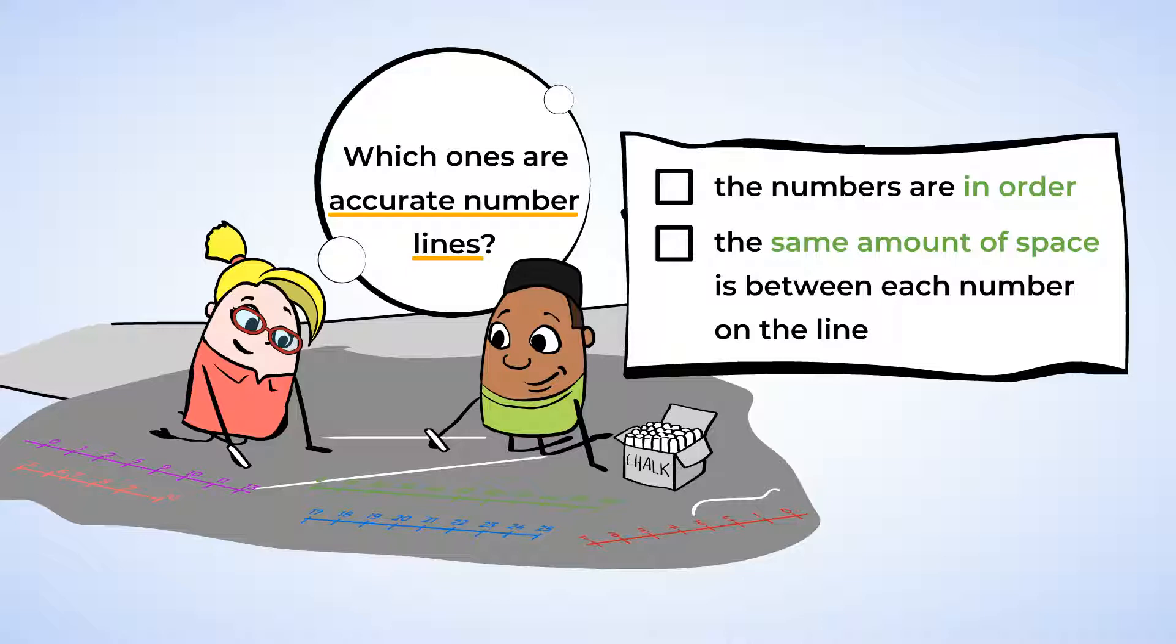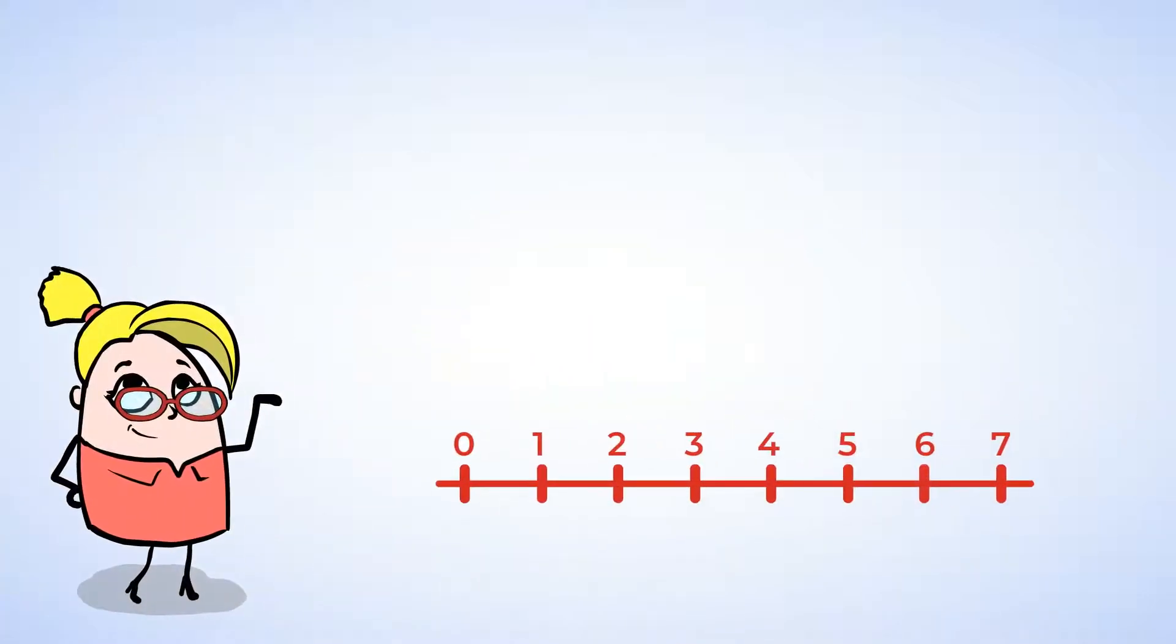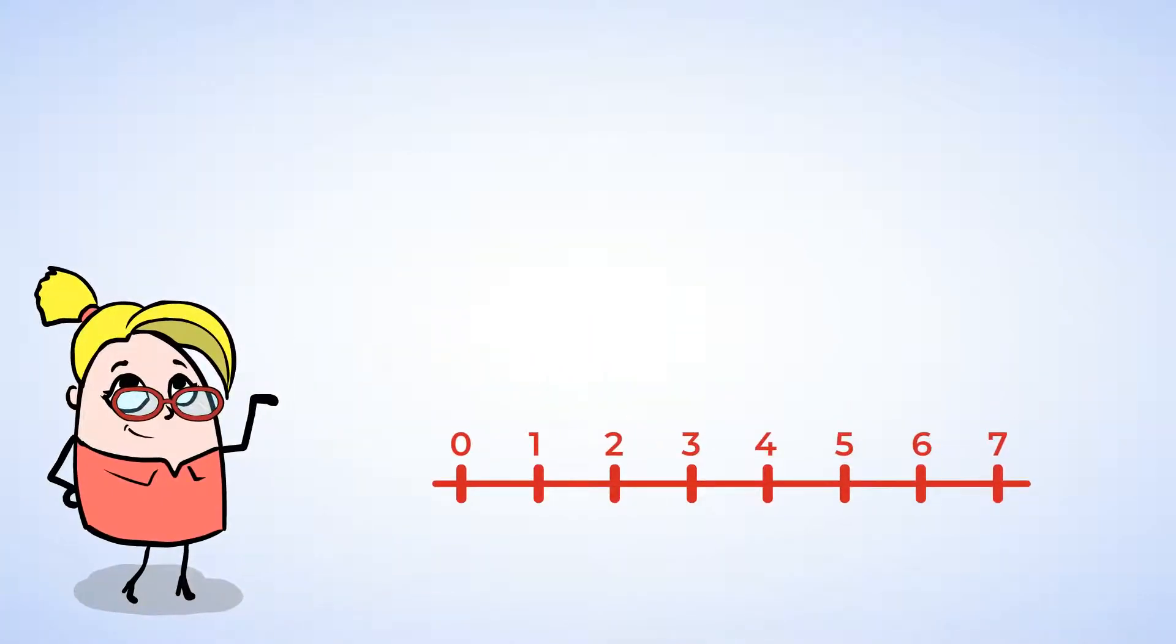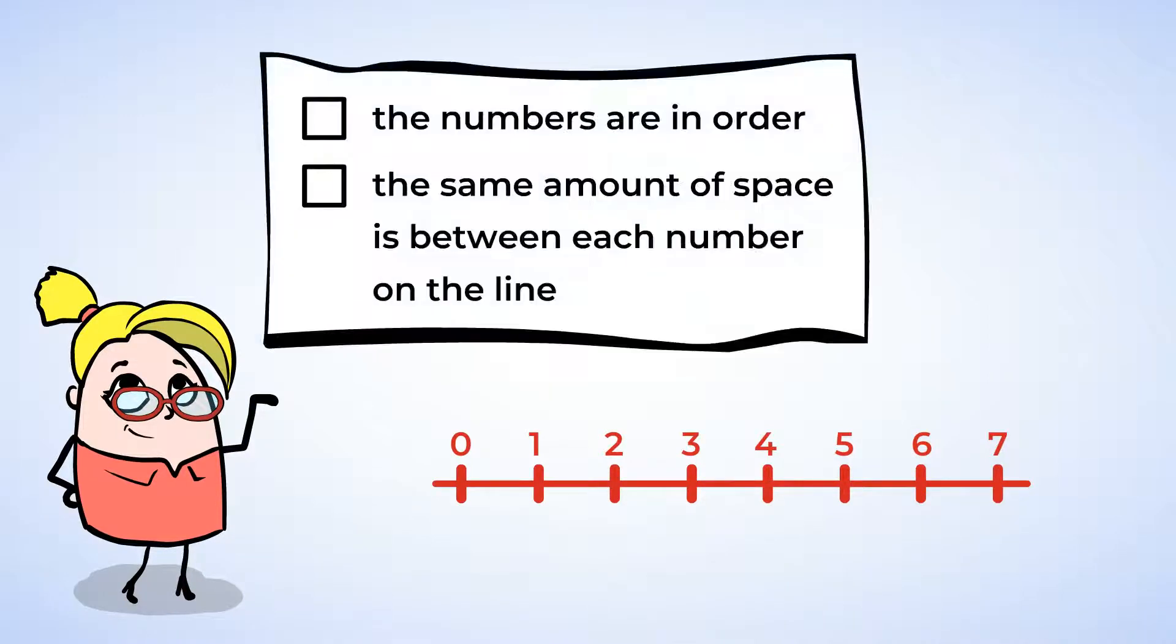So let's look at the red number line first. This one looks pretty similar to the number line we made, but let's check just to be sure. Are the numbers in order? Yep, they count from 0 to 7. Is there the same amount of space between each number? Yeah, it looks like the space is the same between each one. Great! The red number line is accurate.